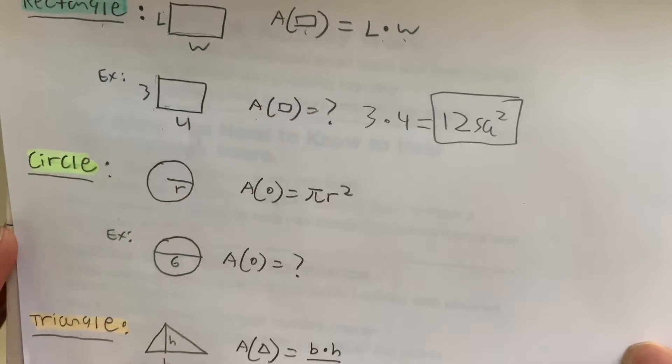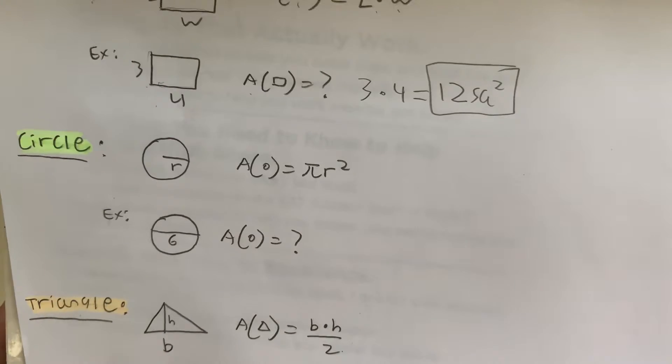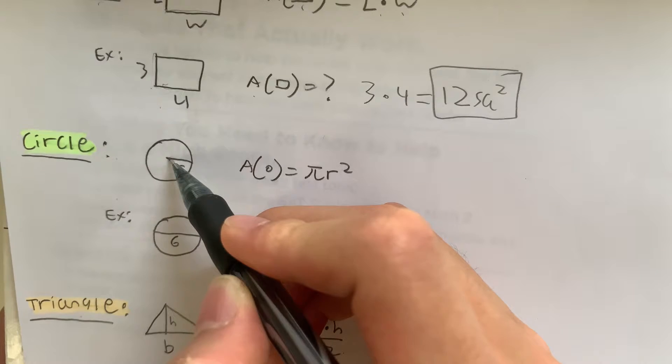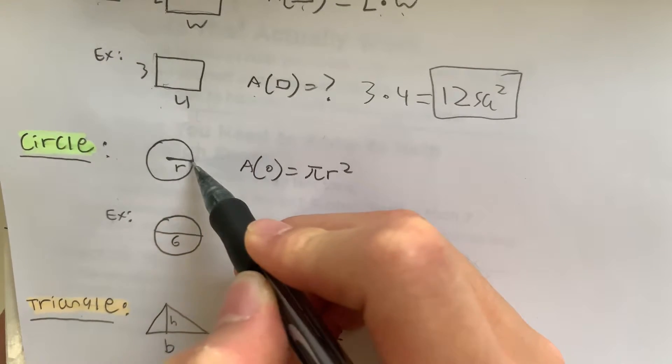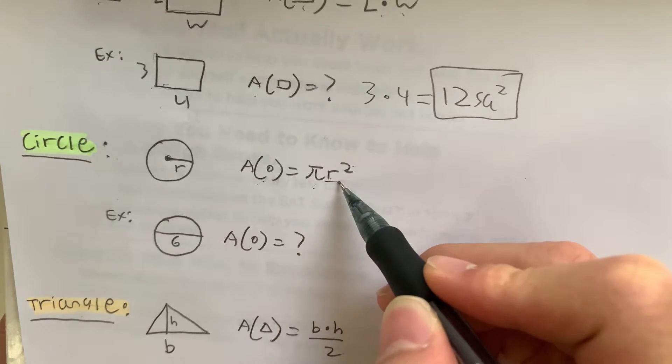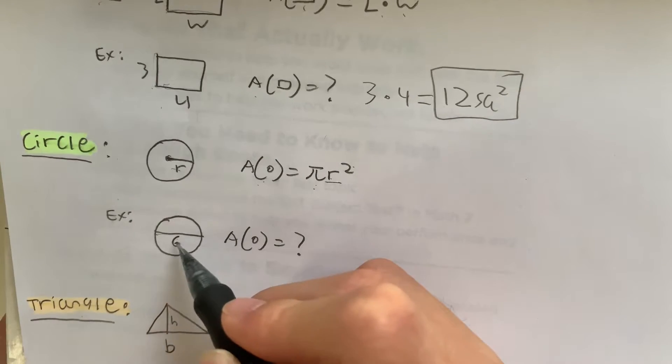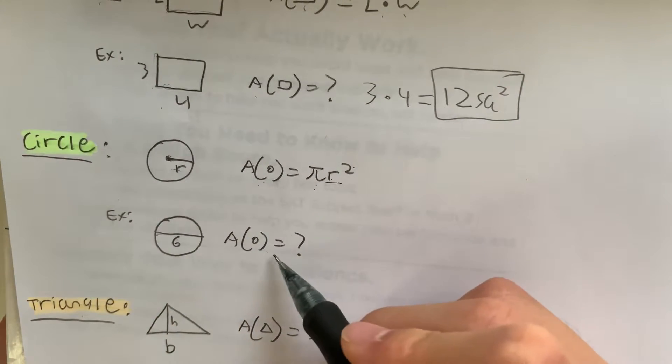Next we have a more complex 2D shape, the circle. What is the area of a circle? You know there's a radius, and the area is going to be pi r squared, where r represents the radius. So let's look at this example. The diameter is 6. What is the area of the circle?